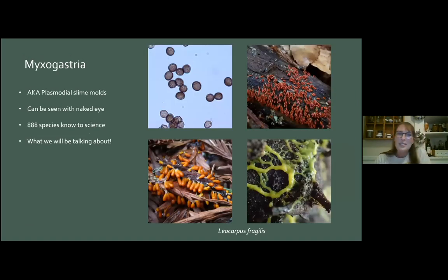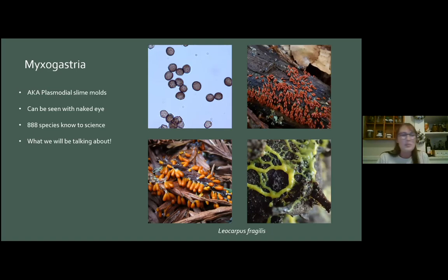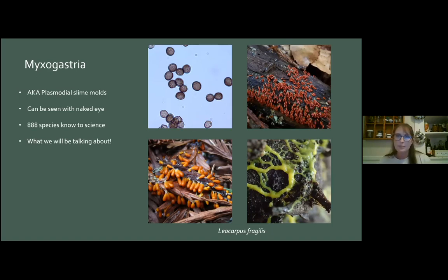The final type is myxogastria, also known as plasmodial slime mold. This can be seen with the naked eye. There are 888 species known to science — I made this slideshow in 2019, but I looked it up last night and it says there are over 900 now. These pictures are all of the same species: Leocarpus fragilis, one you might see at Henry Cowell. One of its common names is the insect egg slime, which is pretty fitting. We're looking at mature fruiting bodies, a picture of it in its plasmodial stage, and a picture of its spores — all one thing, looking very different.